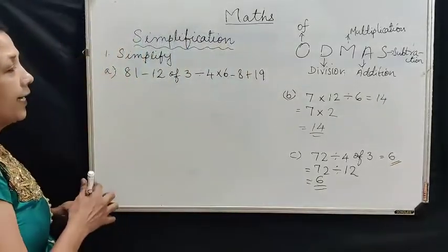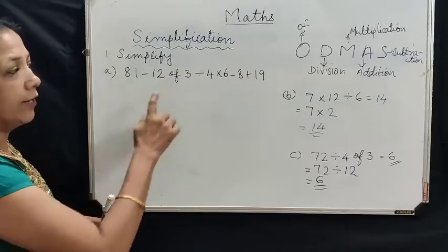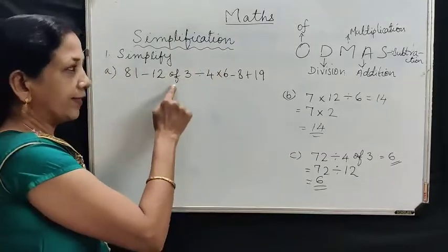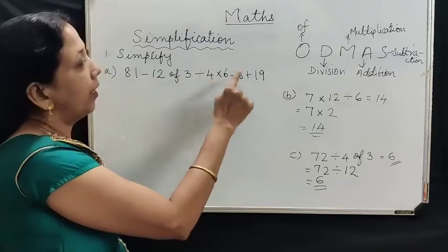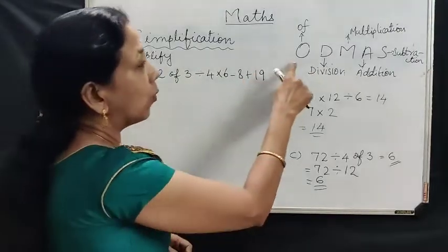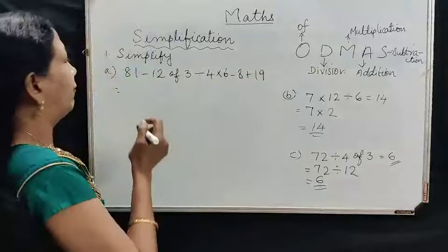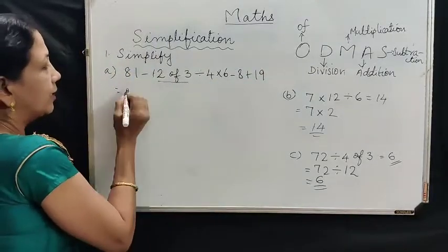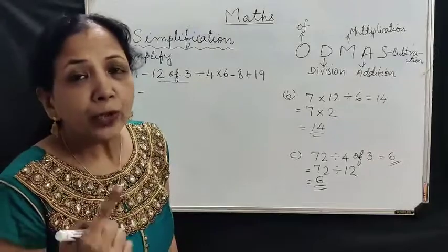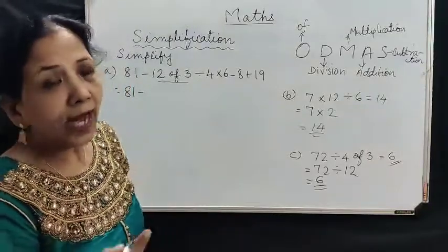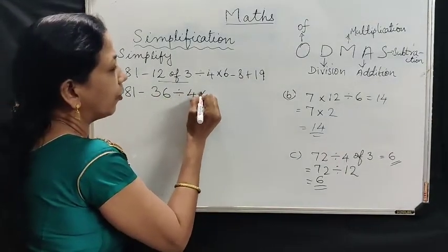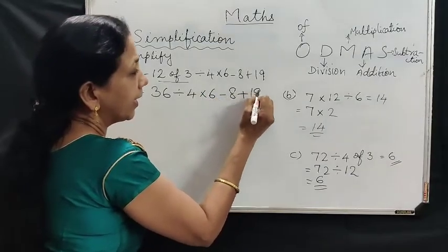Here given: 81 minus 12 of 3 divided by 4 multiplied by 6 minus 8 plus 19. Here 'of' is there, division is there, multiplication is there, plus and minus — all operations are there. So what do we do first? ODMAS — first 'of'. What is 12 of 3? 12 multiplied by 3 — 12 threes are 36. Write 81 minus 36, then the remaining as it is: divided by 4 multiplied by 6 minus 8 plus 19.